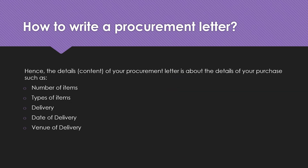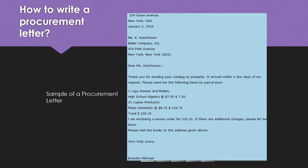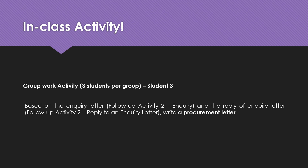The details in your procurement letter content should consist of the following: number of items, types of items, delivery date, and venue of delivery. As you can see in the sample, the items that this person wants to purchase are written in continuous prose. It can also be written in a table format, as that will look more organized.